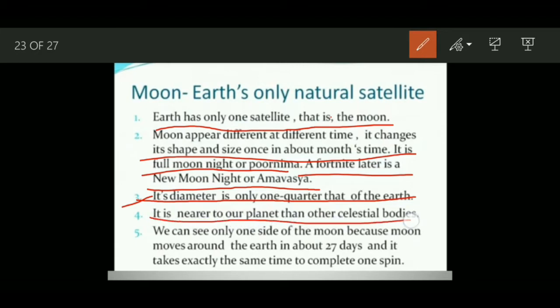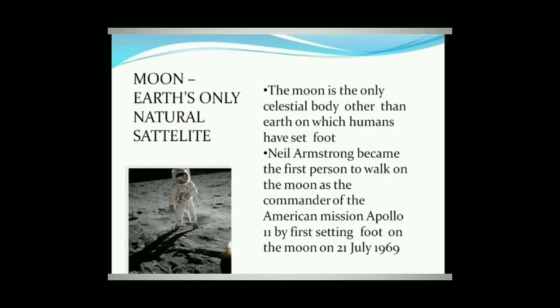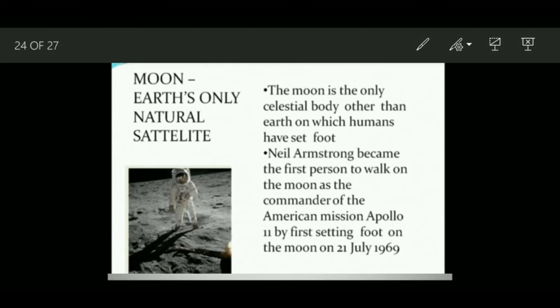We can see only one side of the moon, because the moon moves around the Earth in about 27 days and it takes exactly the same time to complete one spin. Because of this, we can see only one side of the moon.